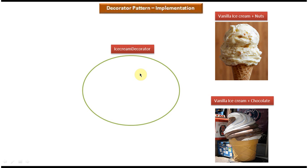In this case, Vanilla Ice Cream is the existing object, and the Ice Cream Decorator added additional things like Nuts or Chocolate to it. So this is the best example of Decorator Design Pattern.